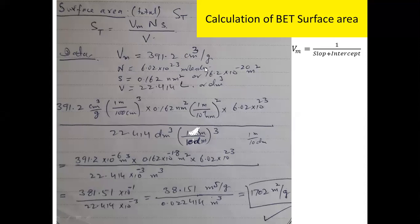Since vm is already given as volume per gram of adsorbent, this directly gives you the BET surface area. There is no need to separately divide by the gram of the adsorbent to get the specific surface area. Let's start the calculation: the value is 391.2 cm³/g, and I want to convert everything into the SI system.